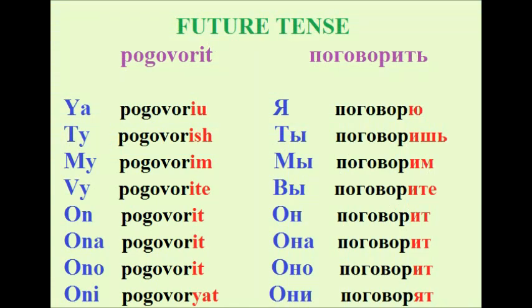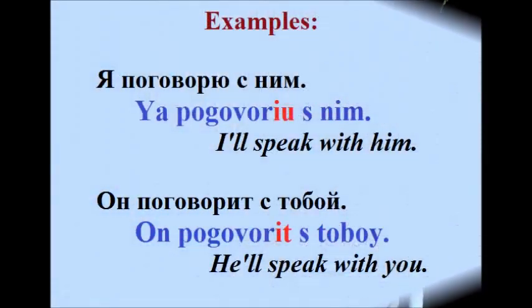Perfective future with поговорить: Я поговорю, ты поговоришь, мы поговорим, вы поговорите, он поговорит, она поговорит, оно поговорит, они поговорят. As you can see, the endings of поговорить are the same as the present tense of говорить — the only change is the added prefix по. Examples: Я поговорю с ним — I will have a talk with him. Он поговорит с тобой — He will talk with you.